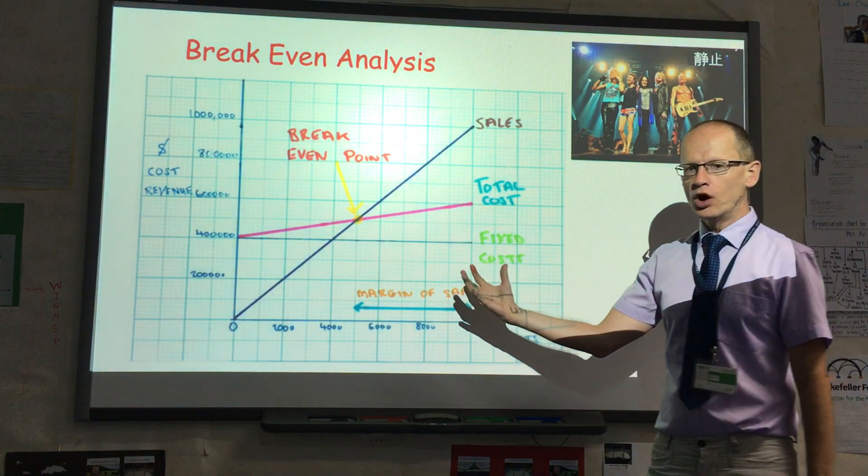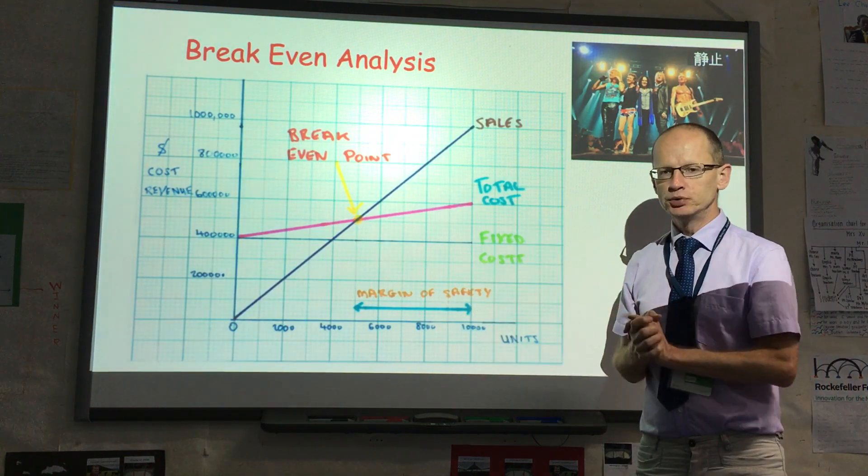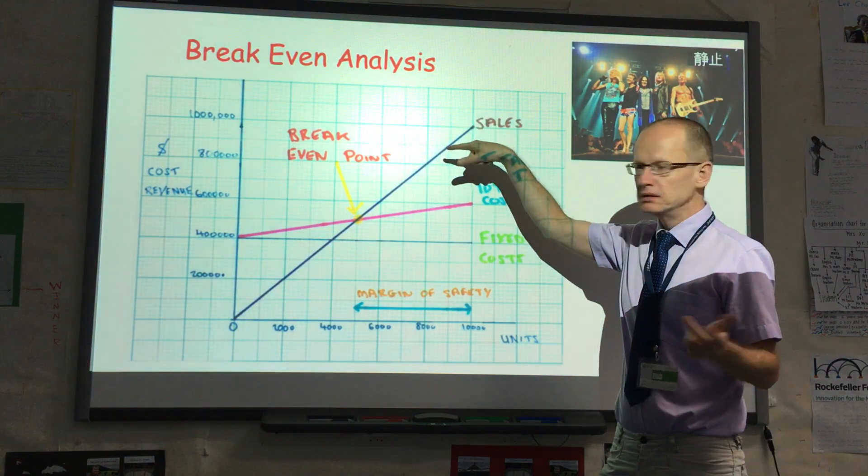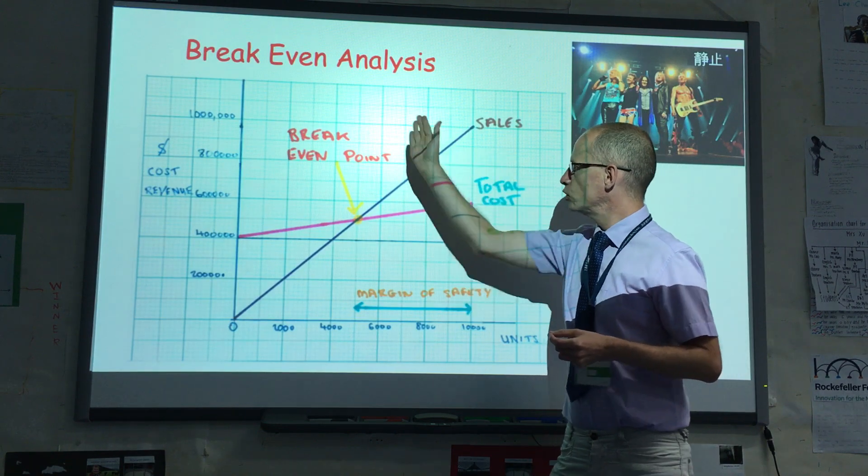Now, obviously for a one-off event, the big advantage of this is it's quite simple to produce. We can change the selling price, and obviously the sales line will move either to the left or move to the right.